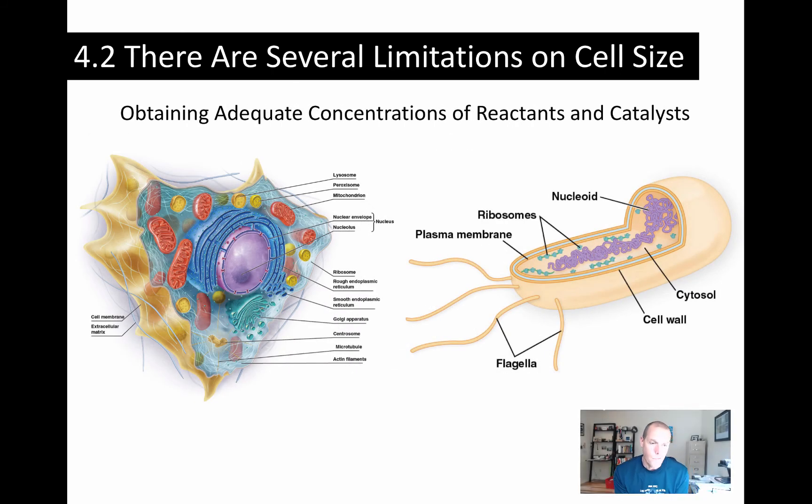The third thing that limits cell size is related to this diffusion problem, and that's obtaining adequate concentrations of reactants and catalysts for chemical reactions. So if you think about this cell on the right-hand side here, that's a bacterial cell. And it's much smaller by and large, about 2 micrometers in length relative to this animal cell on the left, which is now much larger, let's say 25 micrometers.